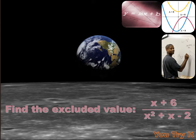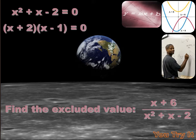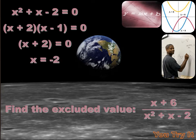Finding excluded values is kind of easy. We just set the denominator equal to 0 and then solve for x, or for the variable. x squared plus x minus 2 equals 0. I can factor the x squared plus x minus 2, and I get x plus 2 times x minus 1 equals 0. That means that either x plus 2 has to equal 0, in which case x equals minus 2, or x minus 1 has to equal 0, in which case x equals 1. So there's two excluded values, minus 2 and 1.